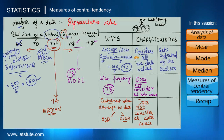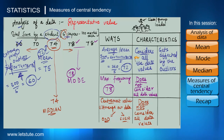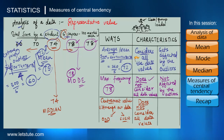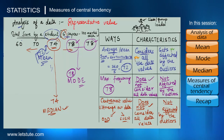To avoid this, sometimes we trim the data — we remove the extreme value and take the average of the remaining values: 70 + 74 + 78 + 78 divided by 4, which gives 75, quite close to our original mean of 72. This trimmed mean can be used when needed. As for mode and median, since they do not consider all the data values, they are not affected by outliers.